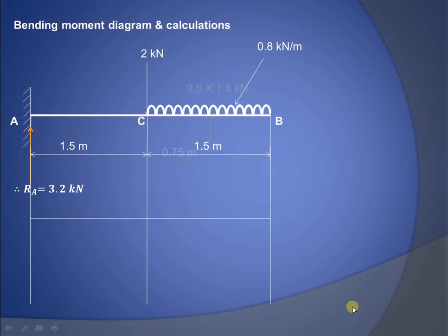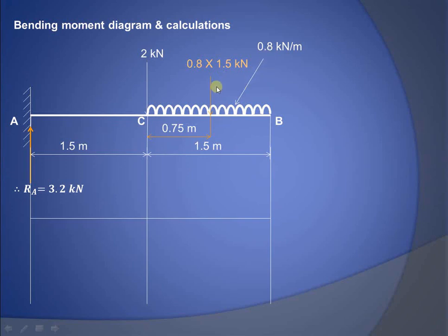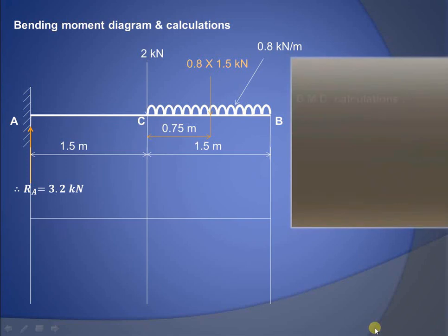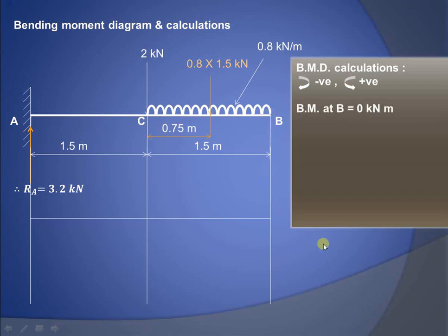Now for the bending moment calculation, we convert the UDL into an equivalent point load: 0.8 × 1.5 kN, allowed to act at the center of the 1.5 meter length. This converts the UDL into a point load for bending moment calculation purposes. The bending moment at B is 0 because it is the free end of the beam.